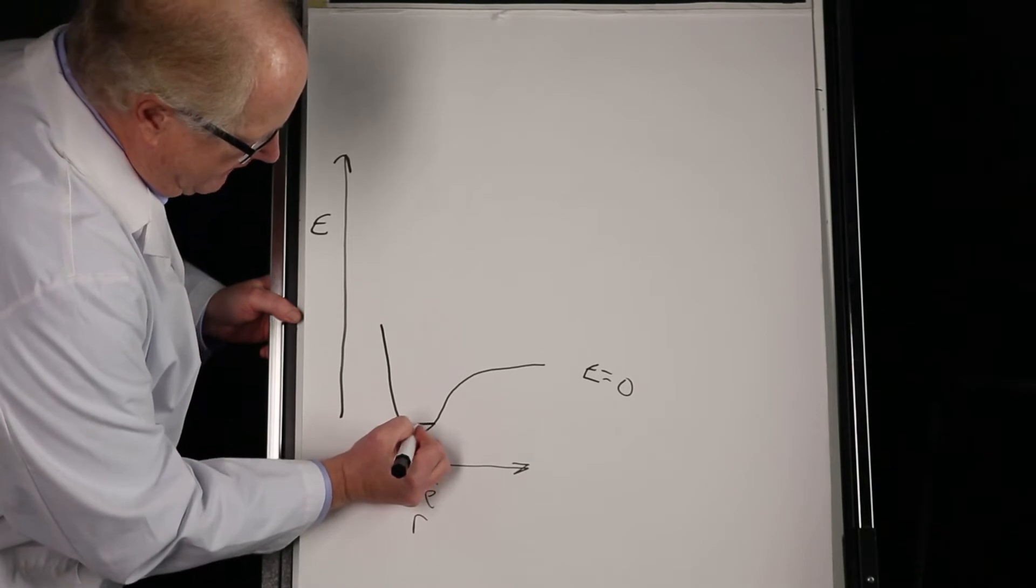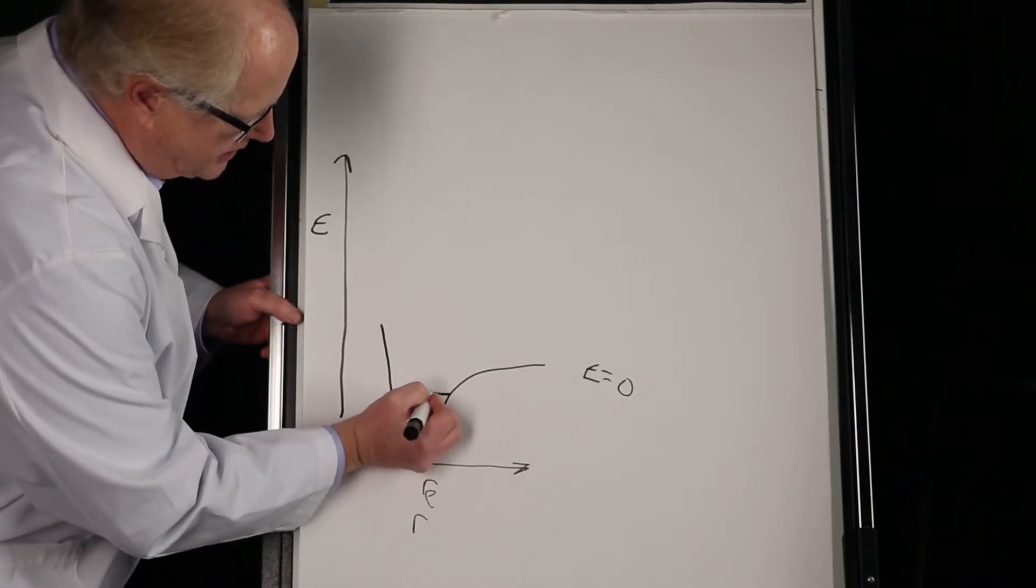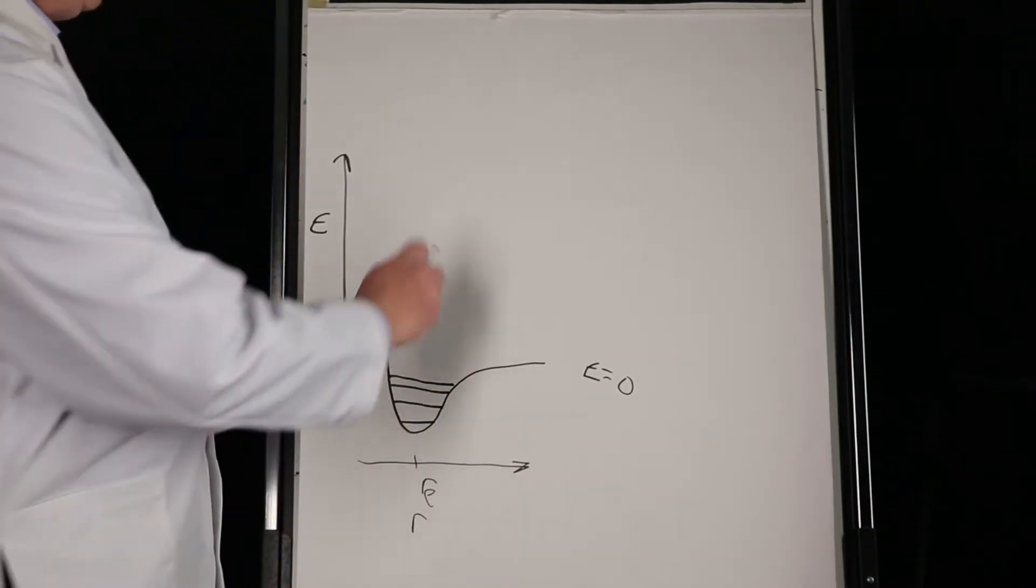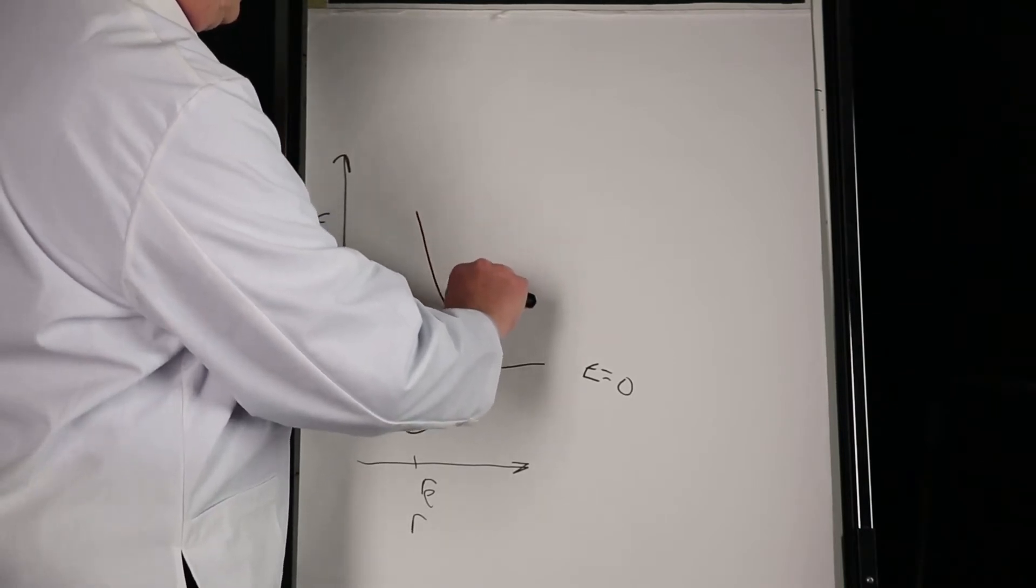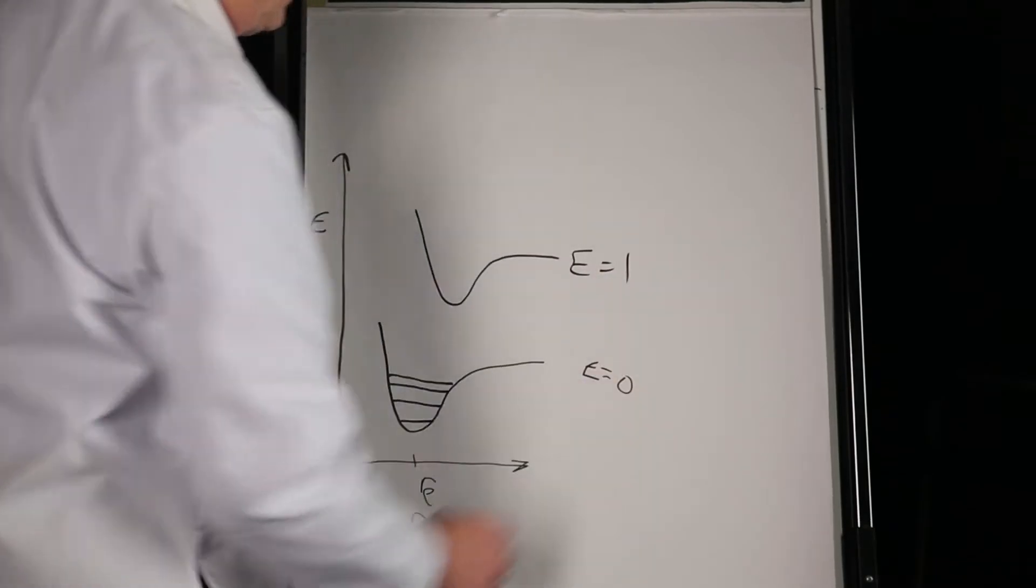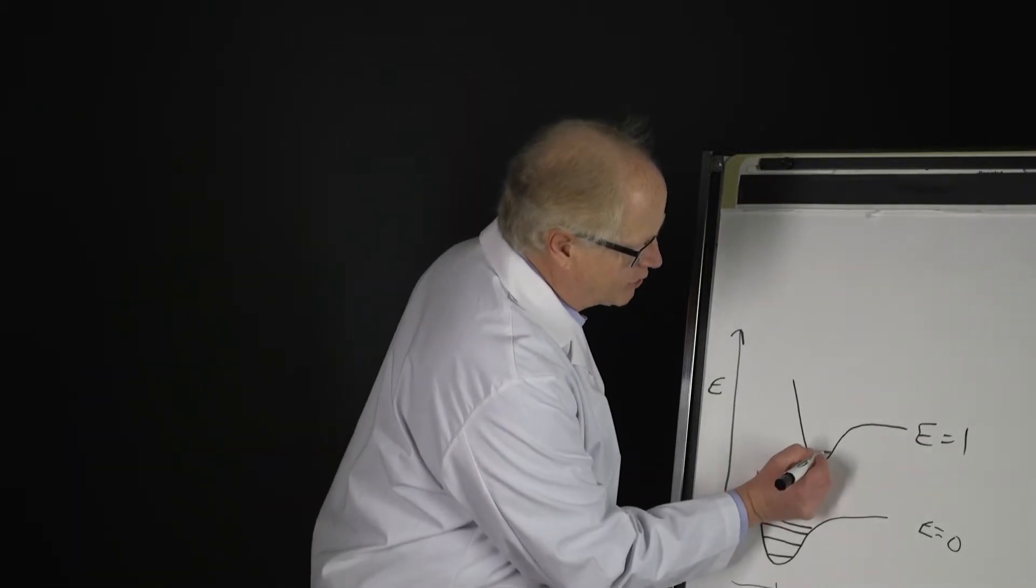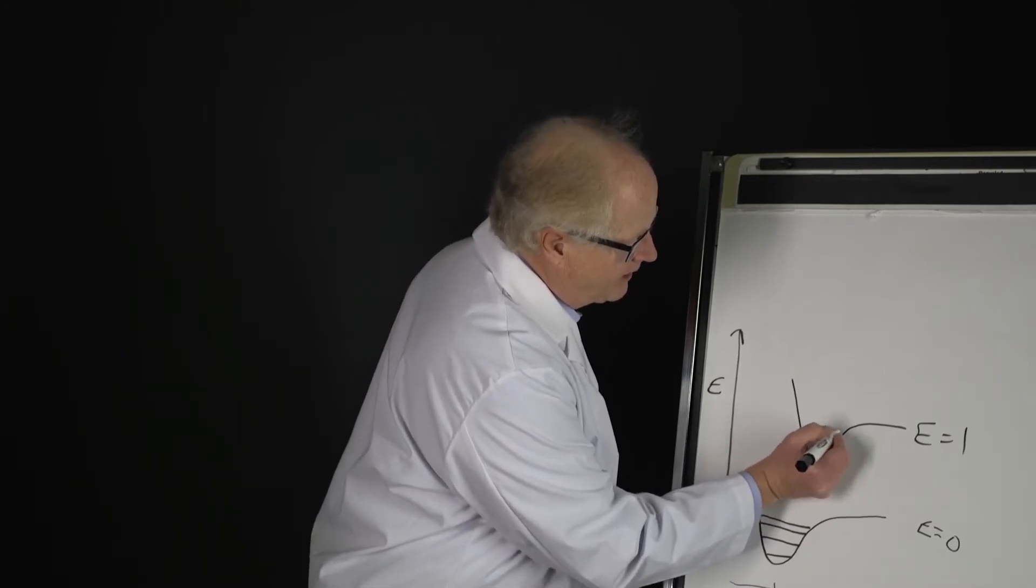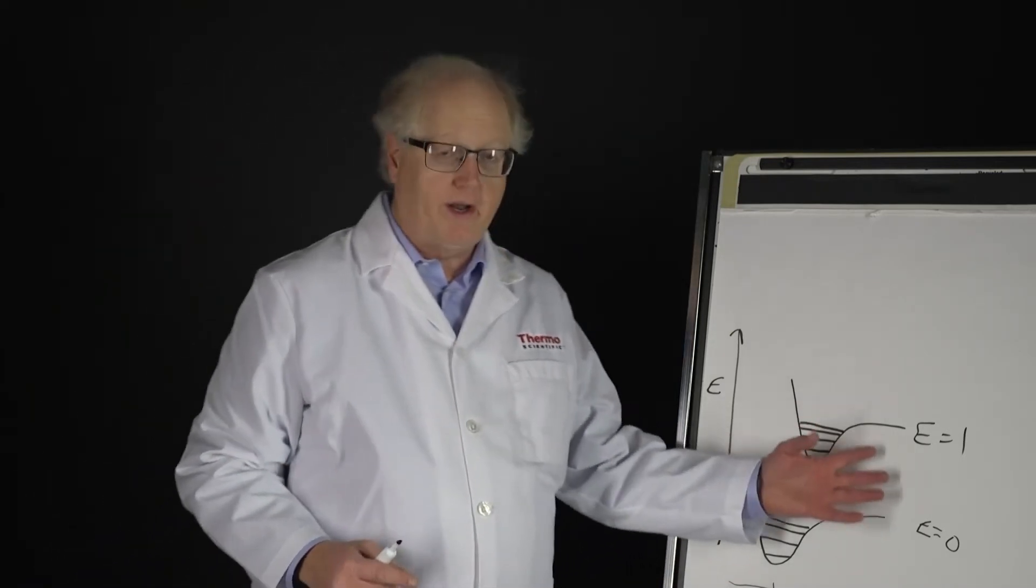So that's a ground electronic state, and within that ground electronic state there are going to be vibrational energy states. Okay, now there's going to be other electronic energy levels. So here we're going to have a higher energy level, E equals one, a first electronic state. So this is an excited electronic state, and in there they're also going to be energy levels.